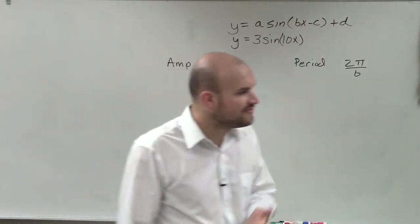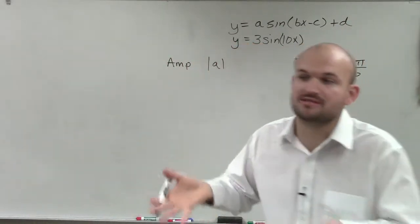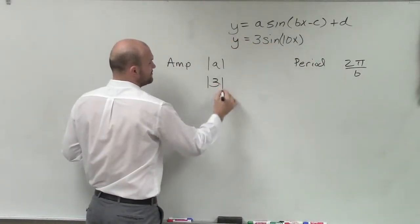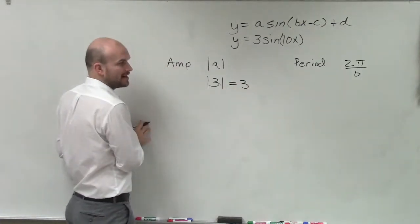Where a is the coefficient of our function, whatever number is being multiplied by our function. So in this case, you can see we have a 3. So the absolute value of 3 is just equal to 3. There's your amplitude.